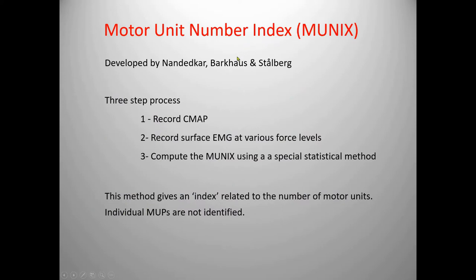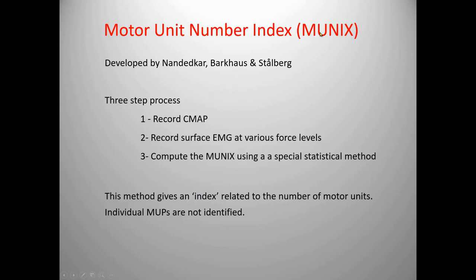The principle of MUNIX is the following: record the CMAP and record surface EMG, first with very slight activation and then stronger and stronger, representing individual or summated motor unit potentials. We then compute the number of motor units by taking the CMAP divided by the individual MUPs obtained. There is some error in this technique, and we do not claim the number is an exact count of axons — but it is well related to the number of axons, so we call it an index: the Motor Unit Index.